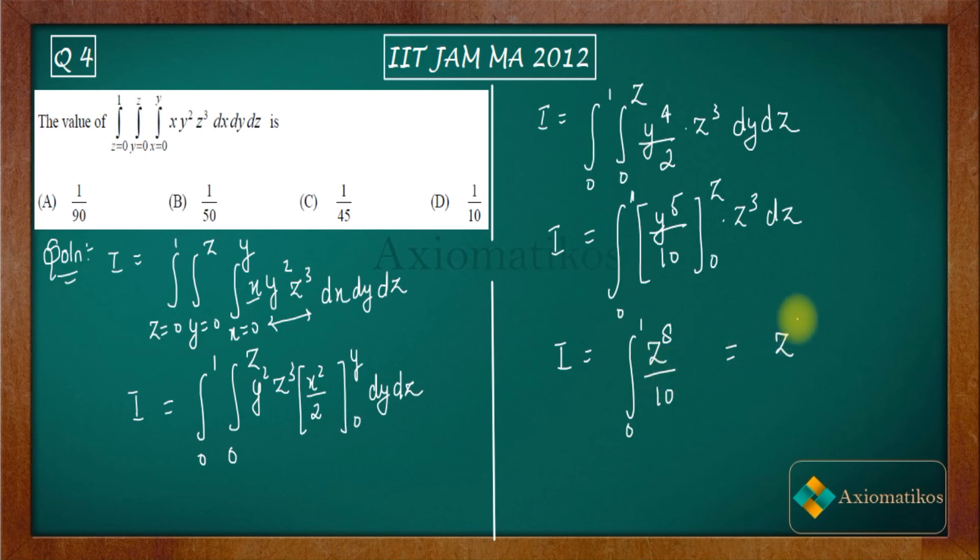Now what will be the integration of z to the power 8? It will be z to the power 9 by 90. So you will end up with 1 by 90.